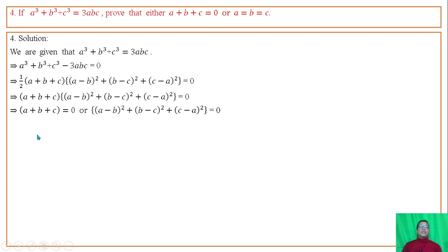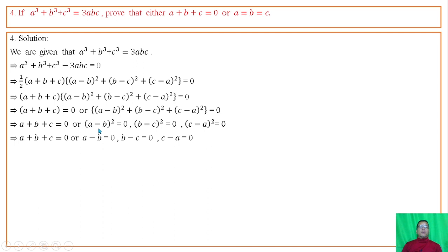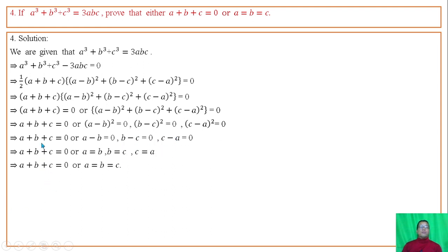The second factor is a sum of squares of real numbers. The square of a real number cannot be negative, so the sum of squares is non-negative. If each square is zero, then a minus b equals 0, b minus c equals 0, and c minus a equals 0, giving a equal to b, b equal to c, c equal to a. Hence proved.